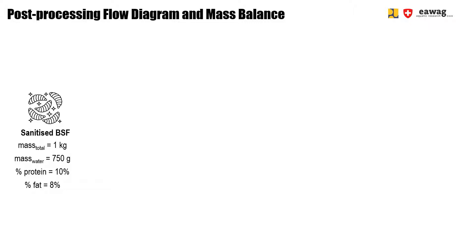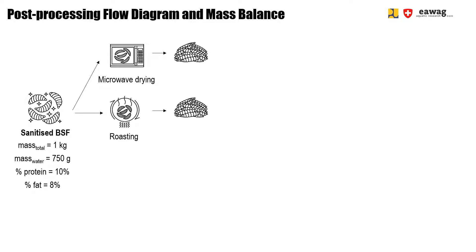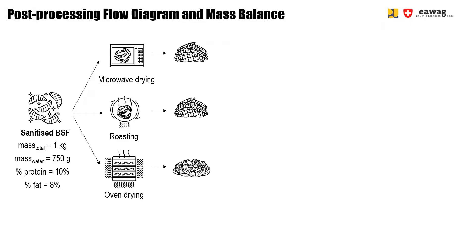The first part of this chapter will show you different drying methods, namely microwave drying, then roasting. We are going to show this in a very small scale and in a medium scale application. And then we are going to show you how to oven dry BSF larvae. Regardless of the drying method used, the water inside the larvae is evaporated, which results in a mass reduction of around 70%.